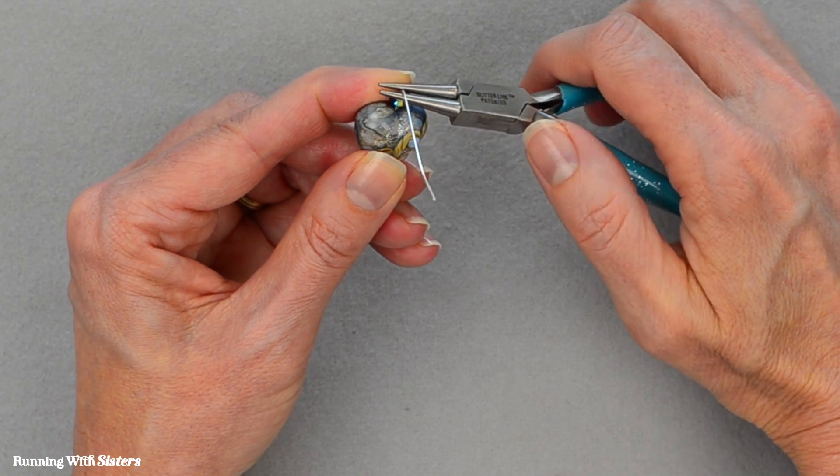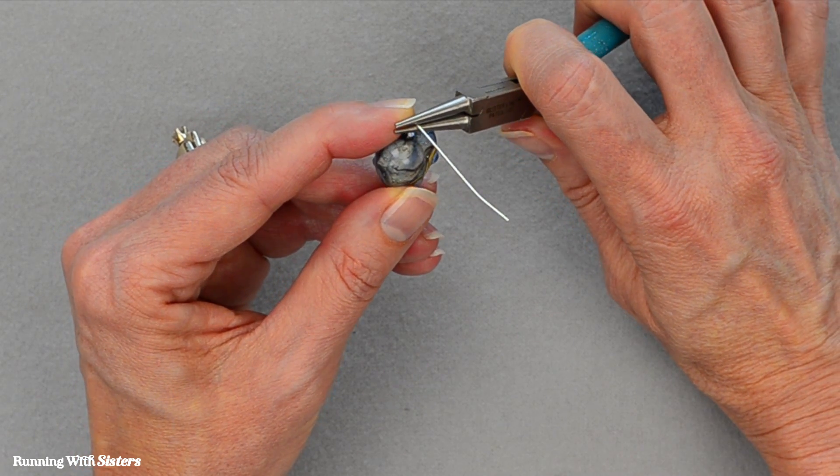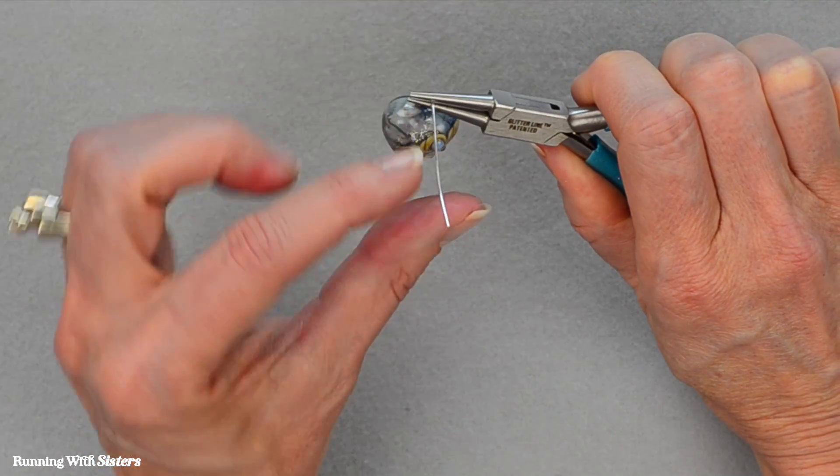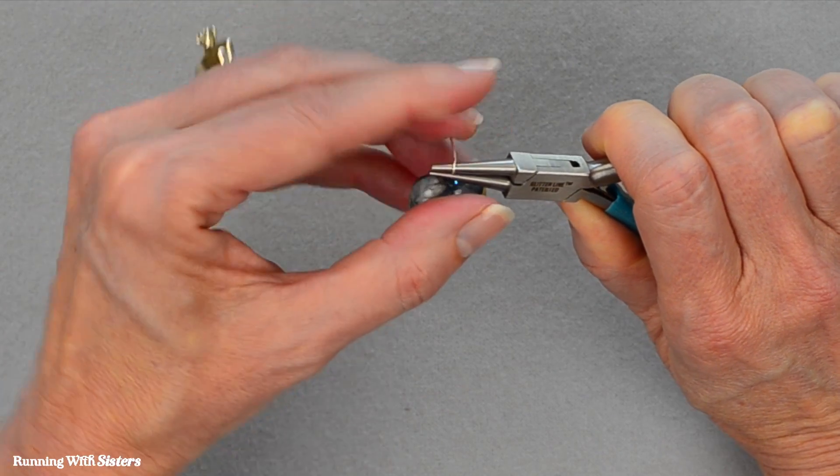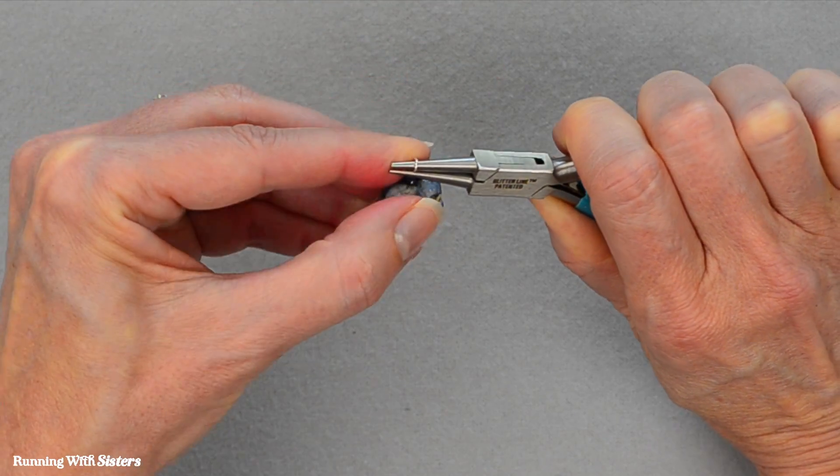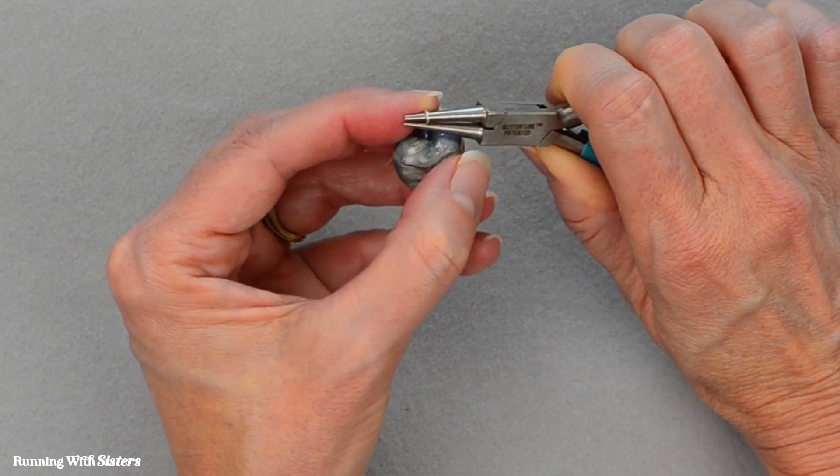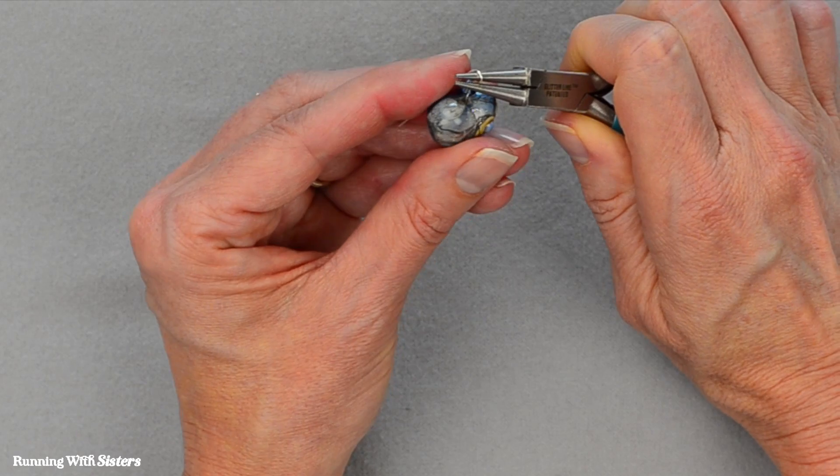Then I'm going to reposition my pliers so that I'm holding on to the top part of that 90 degree bend with my round nose pliers. And then I'm going to wrap my wire all the way around that top jaw of the round nose pliers at that sort of part way up the top jaw mark. And that's so that my loop is a little bit bigger so it'll fit over a leather cord.